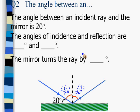Angle i equals 70 degrees and angle r is also 70 degrees. The angles of incidence and reflection are 70 degrees and 70 degrees, and the mirror turns the ray by 140 degrees.